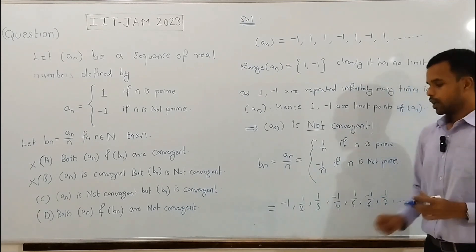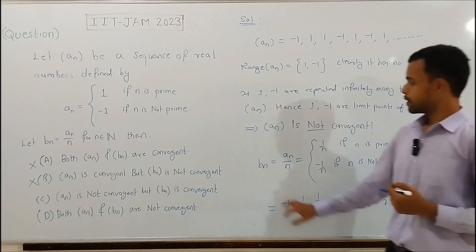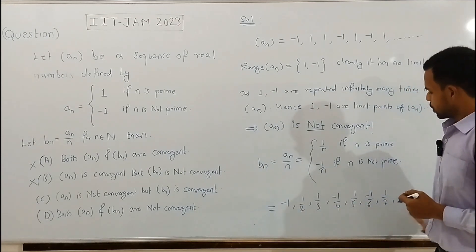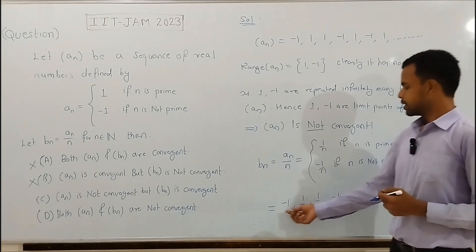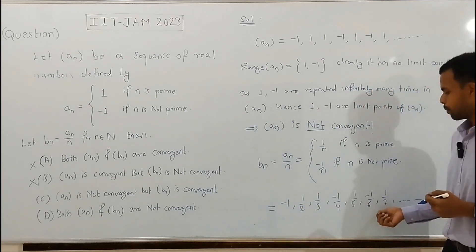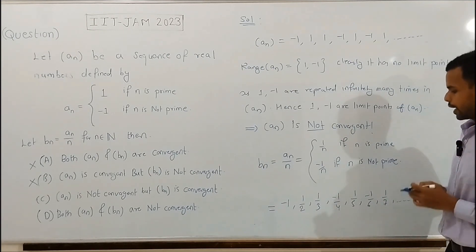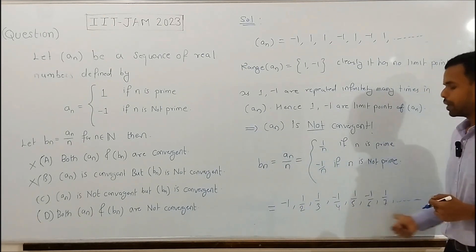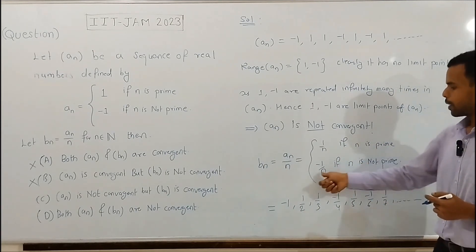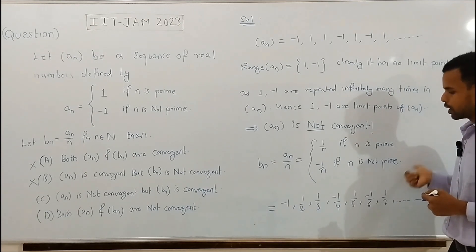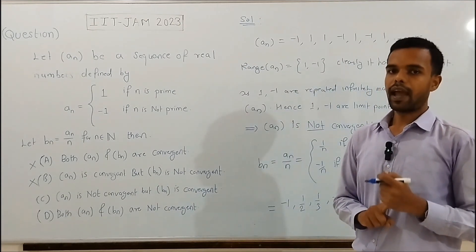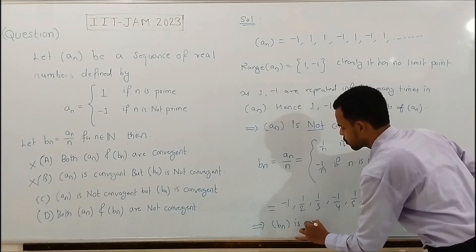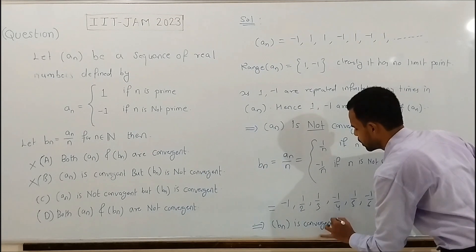From the terms of sequence bn, we see that the range set is bounded — every point of sequence bn lies between -1 and +1. So the range set is bounded, which implies sequence bn is bounded. Also, sequence bn has a unique limit point, because 1/n → 0 and -1/n → 0 as n → ∞. So sequence bn is a bounded sequence with a unique limit point, which implies sequence bn is convergent.